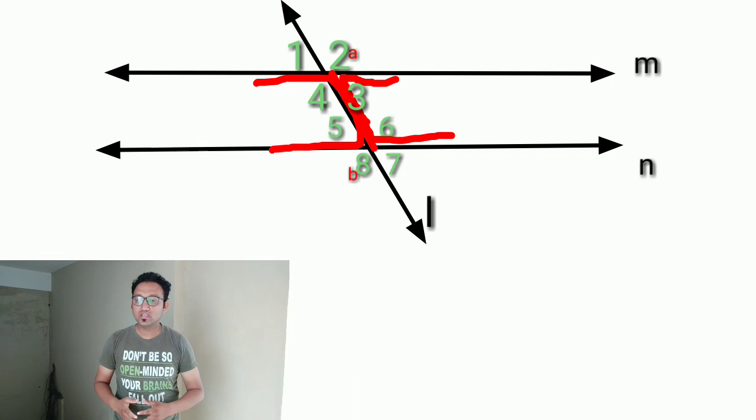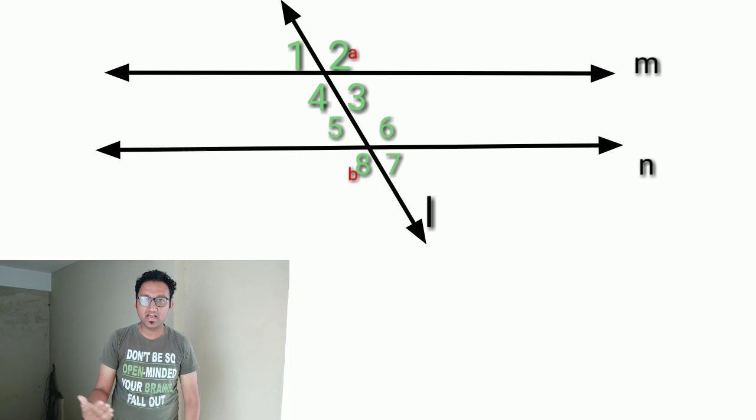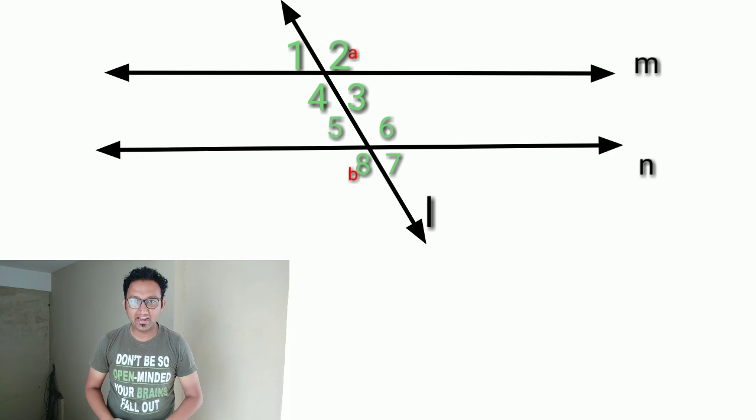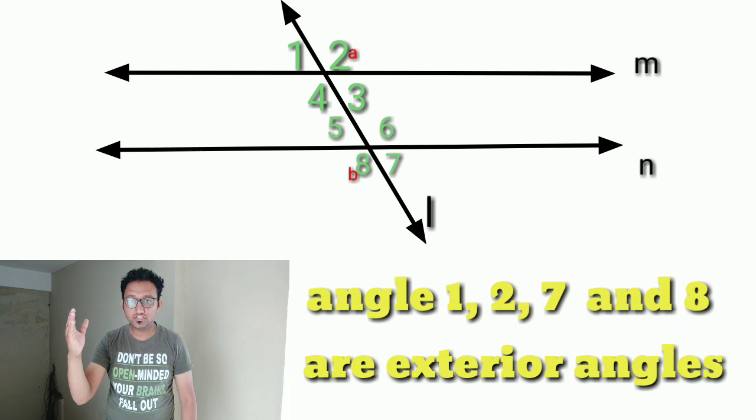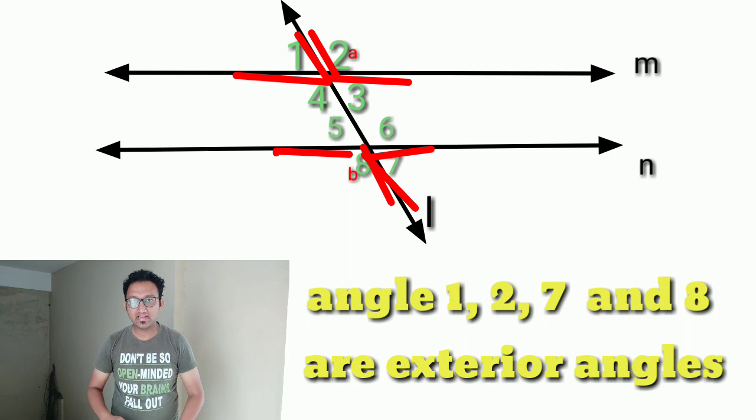Now what are exterior angles? Very simple. Those angles which do not have line segment AB as a common arm, these are exterior angles. So we will get angle 1, angle 2, angle 7, and angle 8.